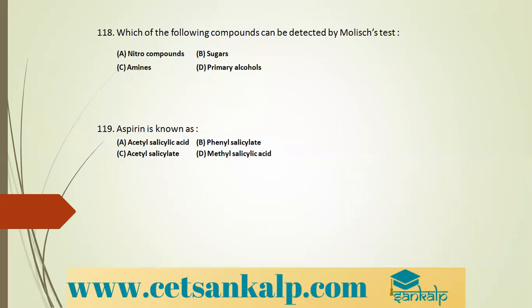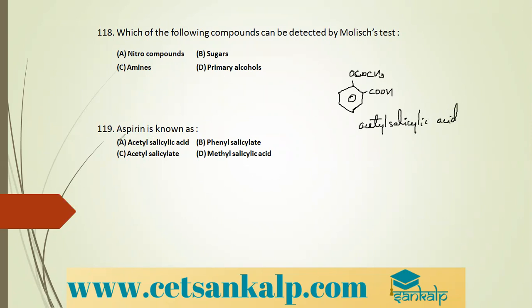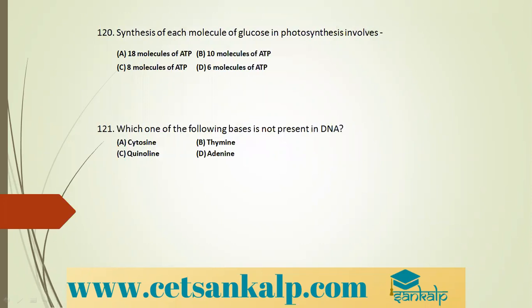Q: Aspirin is known as acetyl salicylic acid. Structure: benzene ring with OCOCH3 and COOH groups. It is used as an anti-pyretic.